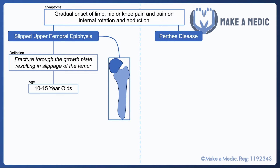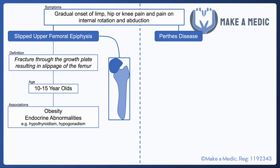It tends to usually present in 10 to 15 year olds and it's associated with a few conditions: obesity is one of them, and then other endocrine abnormalities which may in turn be associated with obesity, such as hypothyroidism and hypogonadism. It's managed by internal fixation to try and realign these two components of the femur.